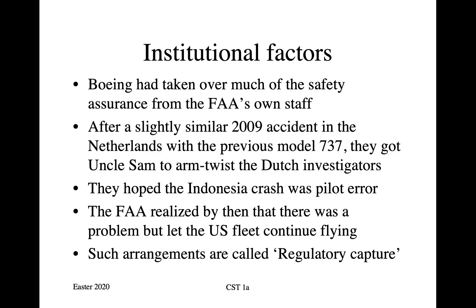Boeing is, in essence, a monopoly within the USA, having been allowed to take over previous competitor McDonnell Douglas and having marginalized a number of smaller aircraft makers overseas. Its only real competitor is Airbus in the European Union. As a result, they came to be seen as an American national champion, and the regulator — the FAA — had become somewhat subservient to them. One way this expressed itself is that Boeing took over much of the safety assurance from the FAA's own staff, and the manager in charge, though located in Boeing's facilities in Seattle, was no longer reporting to the FAA but to Boeing management.